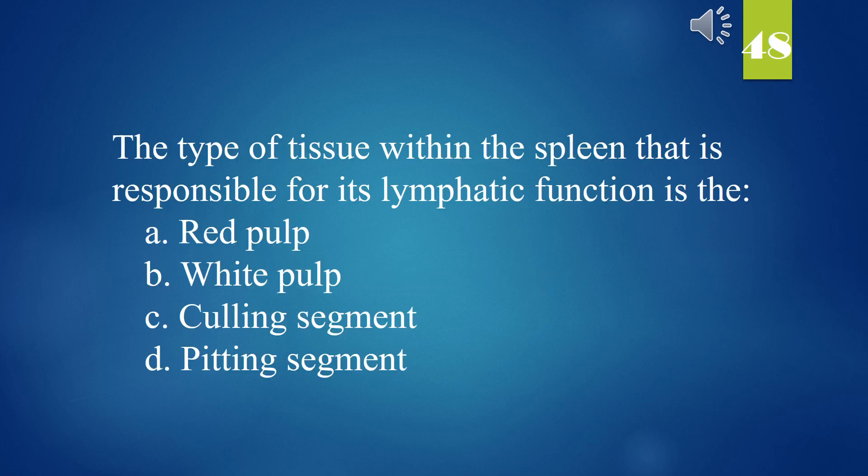The type of tissue within the spleen that is responsible for its lymphatic function is the: A. Red pulp. B. White pulp. C. Culling segment. D. Pitting segment. The answer is B. White pulp.